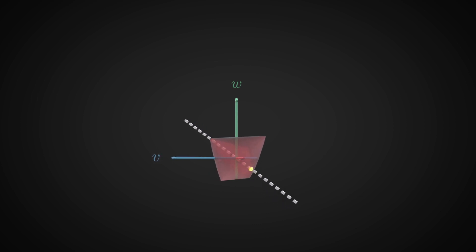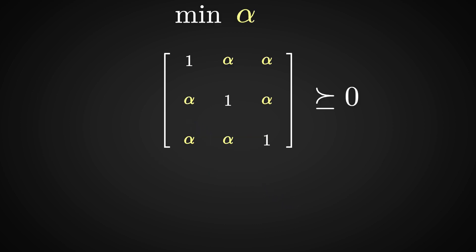One thing you can do, though, in order to rigorously find the smallest alpha that makes this matrix positive semi-definite is to compute the eigenvalues of this matrix, which are 1 plus alpha and 1 minus 2 alpha. So to keep positivity, we need alpha to be between minus one-half and 1. And therefore, the optimal alpha is minus one-half.